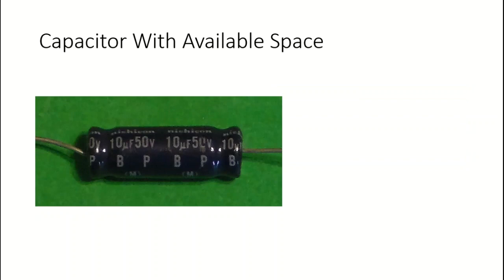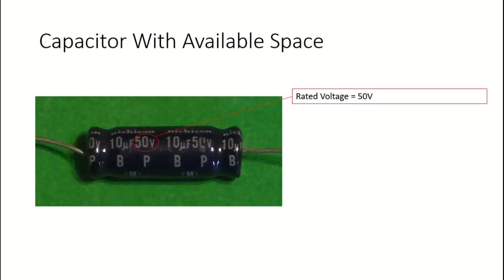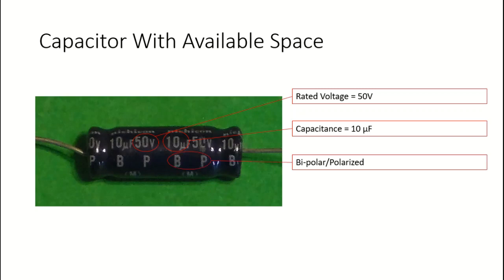Take for example a second capacitor here. This capacitor has a set of numbers, letters, and 'Bp' on it. Because there's enough space on it, we can tell that the rated voltage is 50 volts, the capacitance is 10 microfarads, and because of the 'Bp' written on it, this is a bipolar or polarized capacitor.